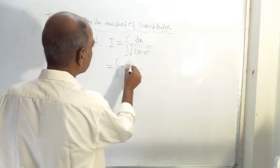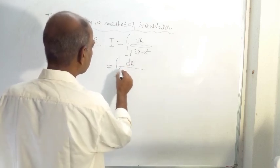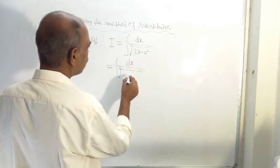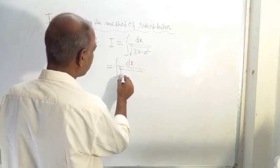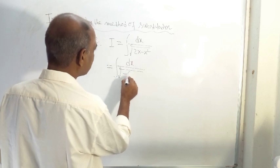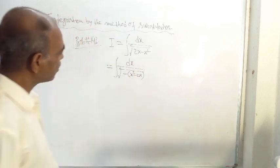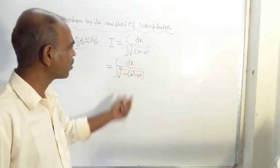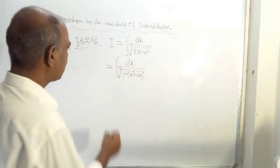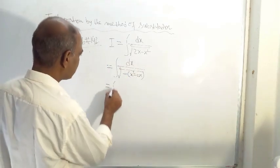Here you can see we can write this as minus x square minus 2x. Can we write this way? Yes, of course this can be written this way. Then this is equal to integration of dx...